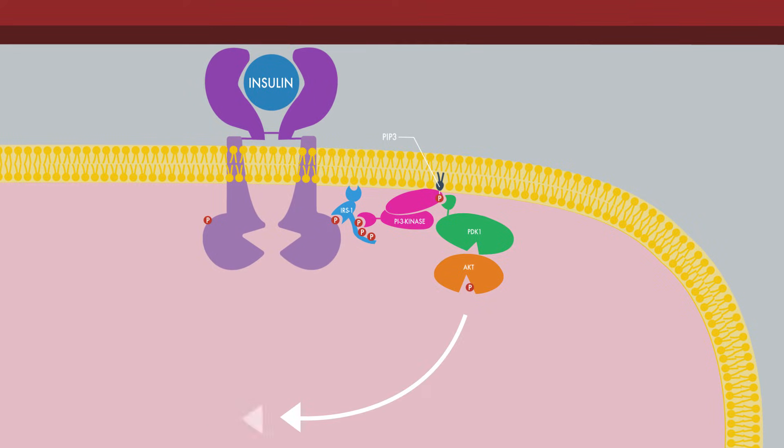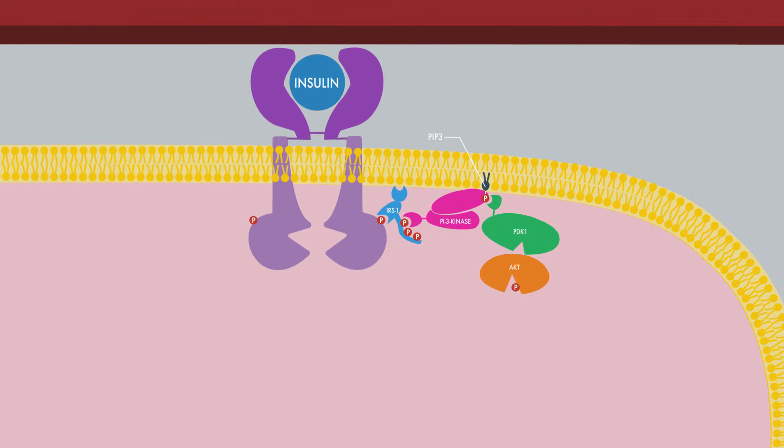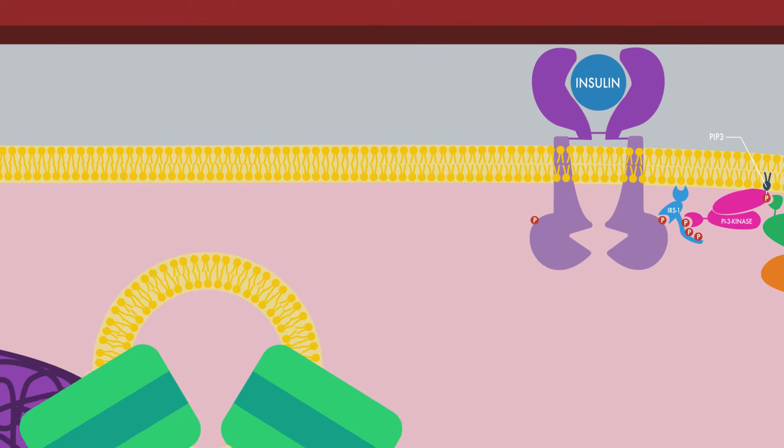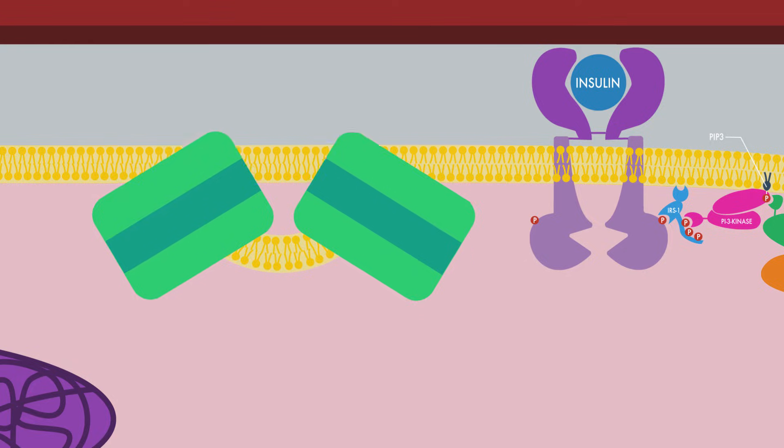This cascade involves many subsequent steps and proteins not shown here. In tissues such as skeletal muscle and adipose tissue, all these steps eventually lead to the recruitment of additional glucose transporters from storage in intracellular vesicles to the plasma membrane in order to facilitate glucose transport into cells.